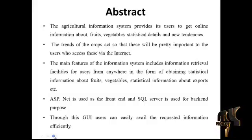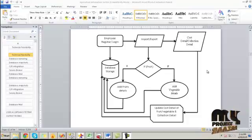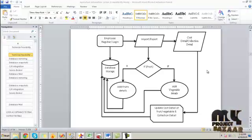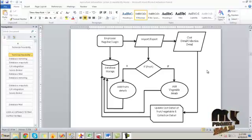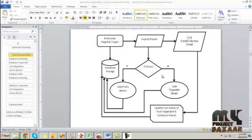This is the flow diagram of our process. Initially the employee will register their details into the database, and by using the username ID and password they will be logged in. In the import and export module, if the imported information is about a fruit, it will be added into the fruits table; if it is vegetable information, it will be added into the vegetable data.